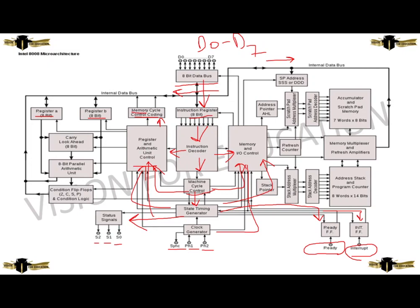The arithmetic register controller unit processes data to the 8-bit parallel arithmetic unit and to register B. It also processes data to the carry look-ahead of 8 bits, then back to register A. Register A processes data back to the 8-bit parallel arithmetic unit. The arithmetic unit processes data to the conditional flip-flops. Conditional flip-flops process the data back to the Intel data bus, which processes data back to the 8-bit data bus, then to the SP address.